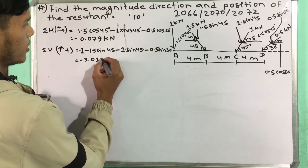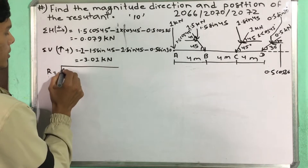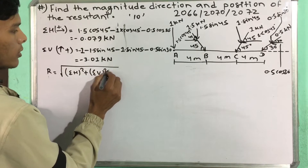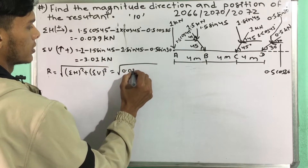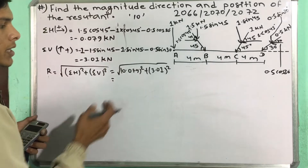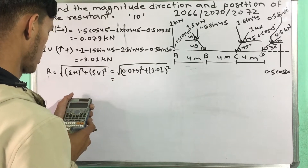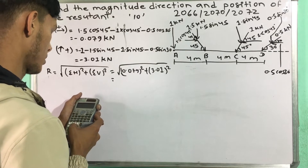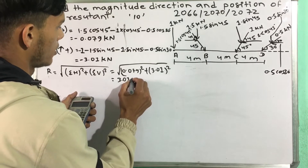The resultant formula is the summation of horizontal squared plus summation of vertical squared: root of 0.079 squared plus 3.01 squared equals 3.01 kilonewtons.